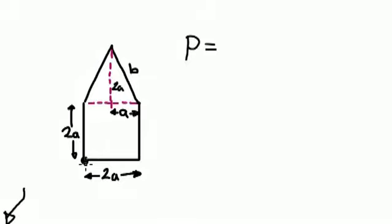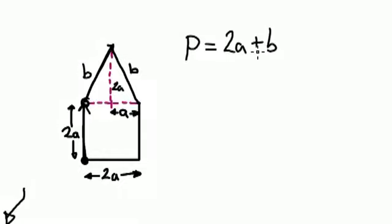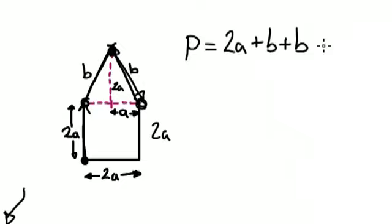Let's say you're an ant. You could start anywhere — let's say you start here. You've got to walk all the way up here, so that would be 2A. And then from here, walk diagonally upwards — that would be a distance of B, so plus B. And then from up here, you walk diagonally downwards — that would be a distance of another B. And then from here, straight down, that would be a distance of 2A, so plus 2A.